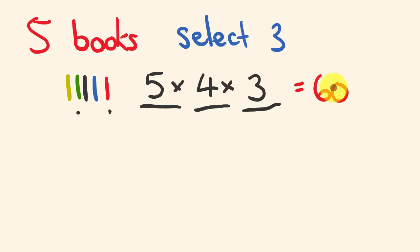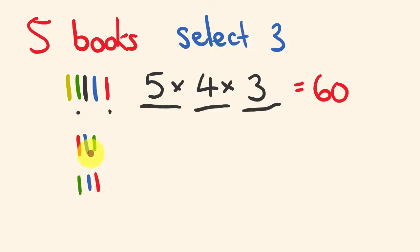What this is showing us at the moment is permutations — it's saying that red, blue, green would be considered different to green, blue, red. But you can see these are just the same books swapped around in order. Permutations include this sort of thing, but combinations say: hang on, these are the same, they're just in a different order. So this permutations answer is sixty, and we just need one extra step to work out combinations.